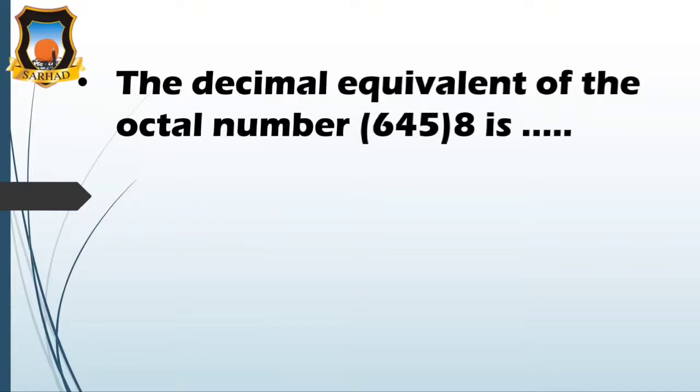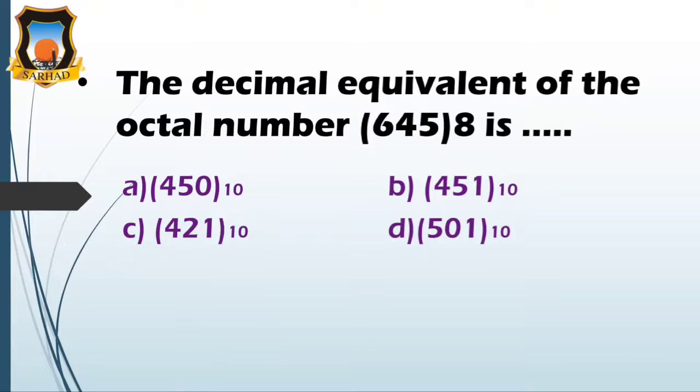Moving on to the next question: the decimal equivalent of octal number 645 is - option A 450 decimal, option B 451 decimal, option C 421 decimal, and option D 501 decimal. So the correct answer is C. The octal to decimal conversion is obtained by multiplying to the power of 8.